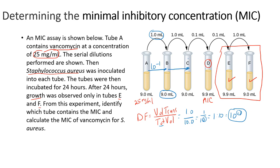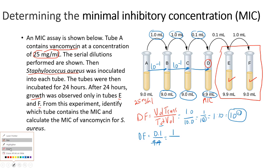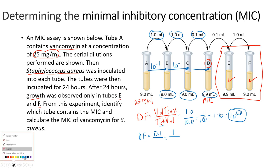The dilution factor from tube B to tube C is the same — it's 1 into 10, so that would also be 10 to the minus 1. From tube C to tube D, it's 0.1 mL transferred into a total volume of 10 mL. So the dilution factor is 0.1 over 10, which is equivalent to 1 over 100 — that's two zeros, so it's equivalent to 10 to the minus 2.